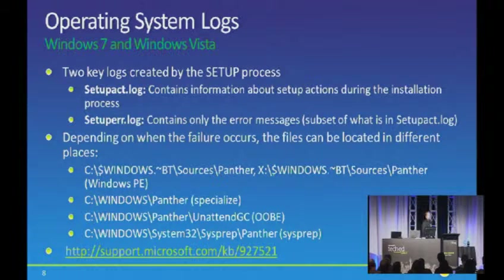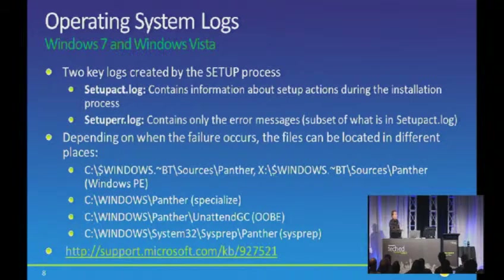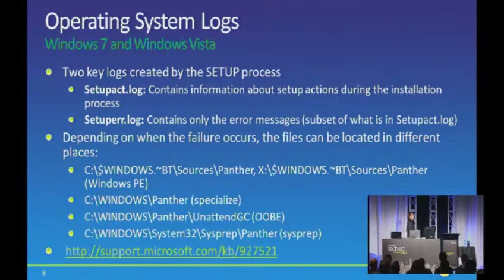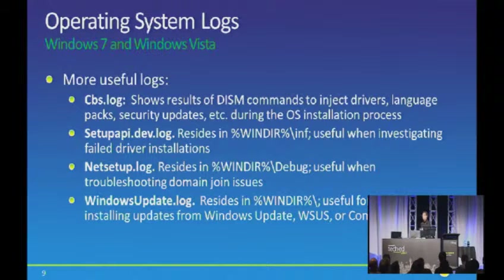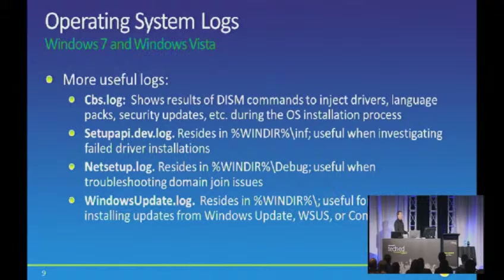There are additional logs created during setup as well. There's a cbs.log which shows results of any driver and component updates injected during the OS install process - if you're installing hotfixes, injecting through the unattend file, or having MDT or Config Manager inject updates offline, those details show up in cbs.log. Anything related to driver installation shows up in setupapi.dev.log. The challenge is if you're injecting drivers, you need to look in two places: did the driver get injected into the OS and staged into the Windows 7 driver store, and was it detected and installed as part of normal plug-and-play? When you add MDT and Config Manager there's a third part - was the driver copied to the machine initially, then injected, then installed?